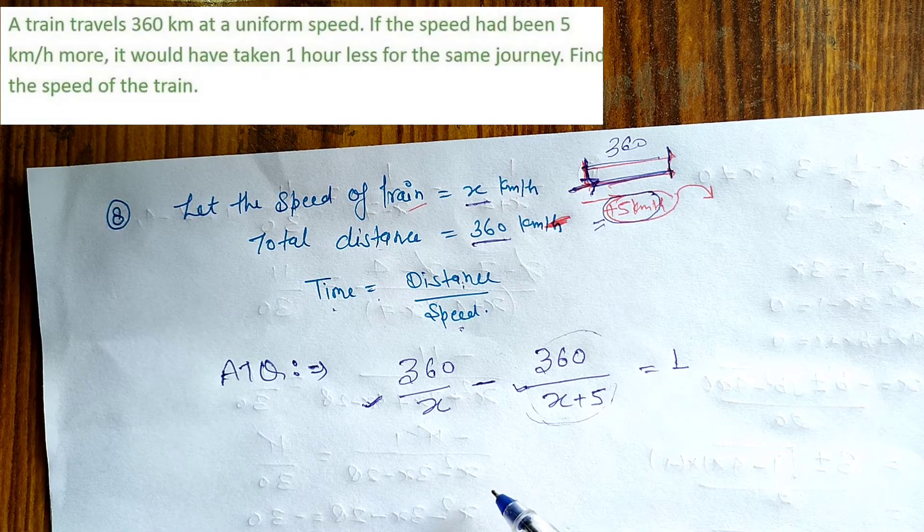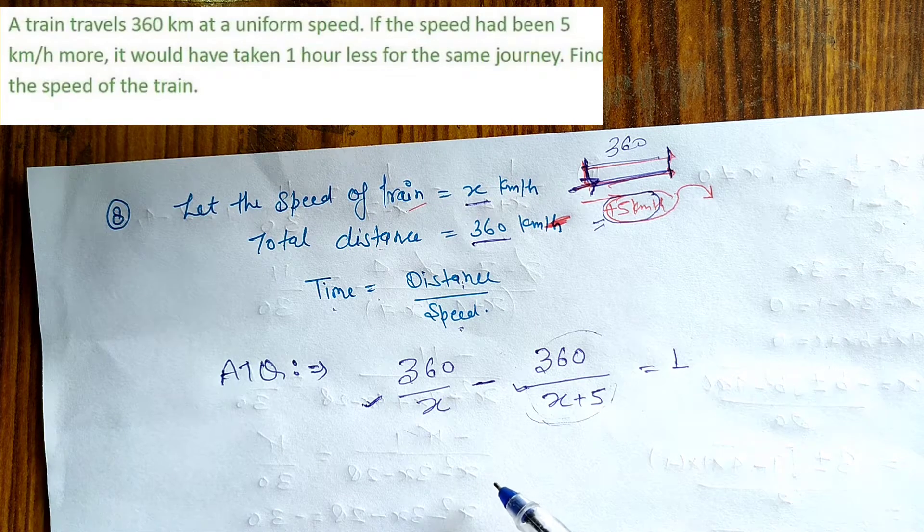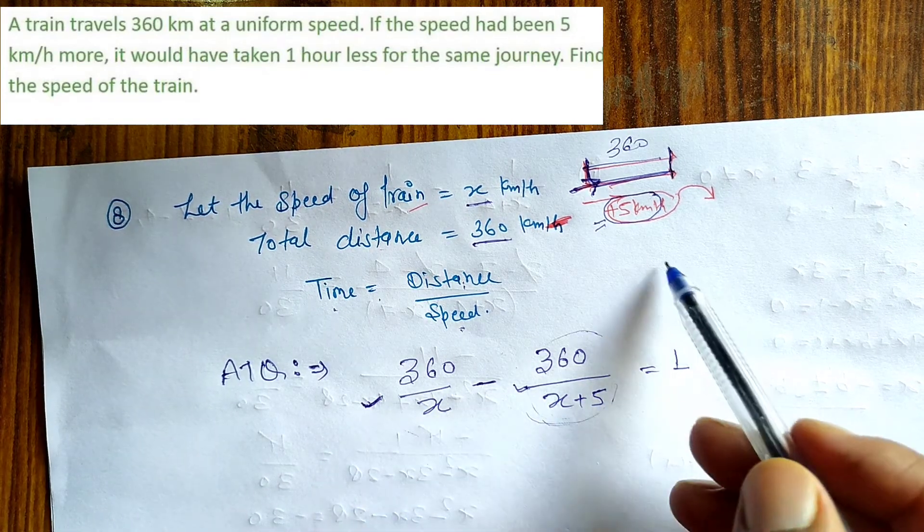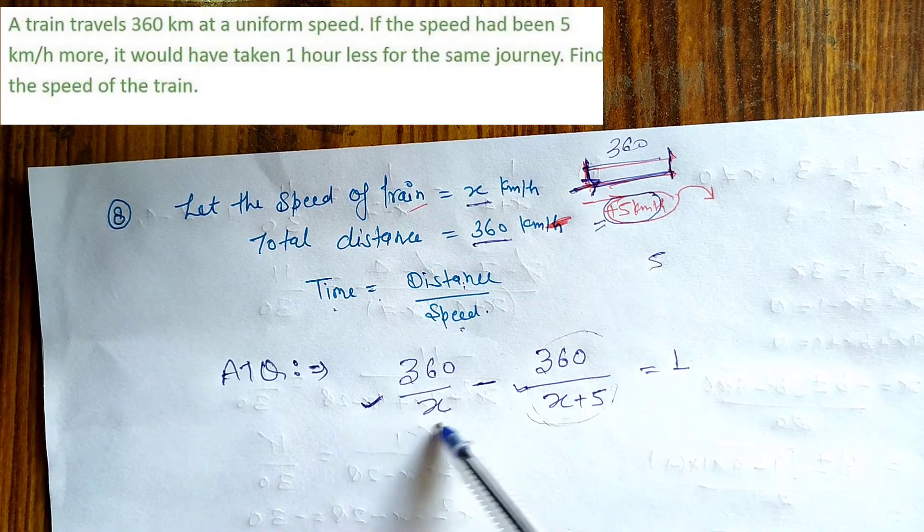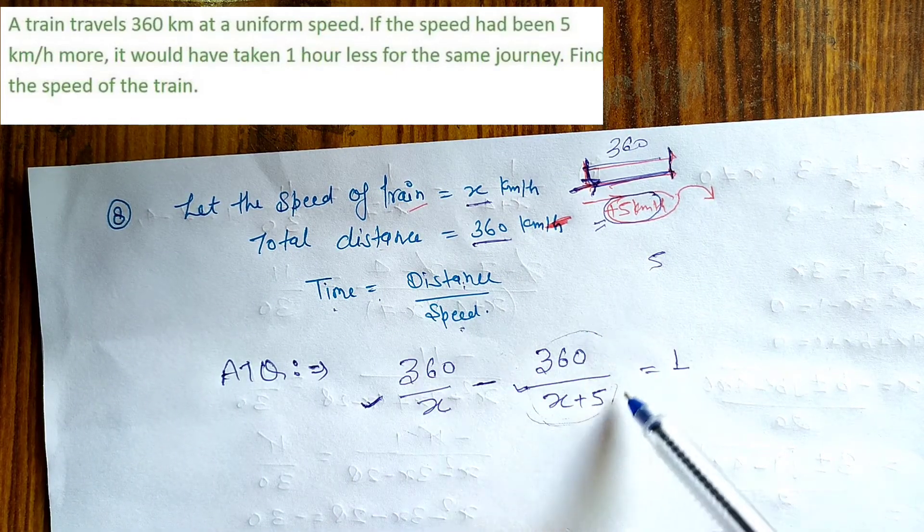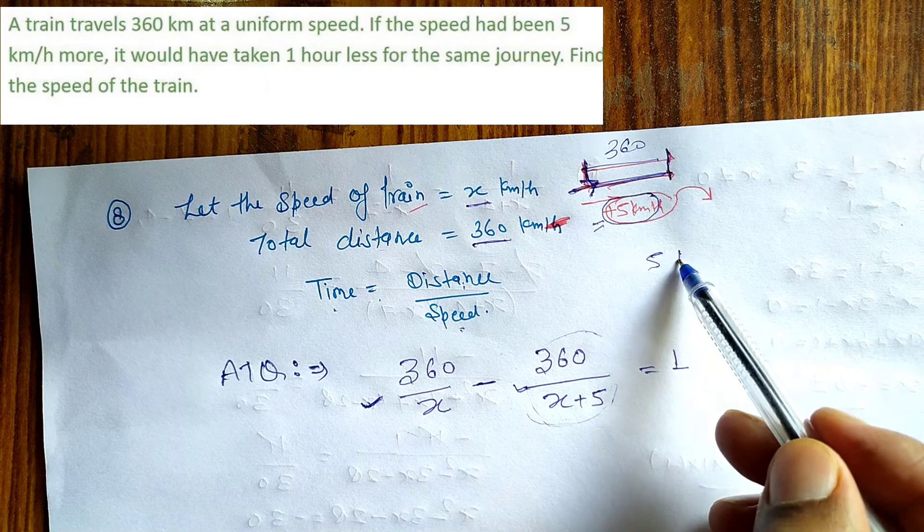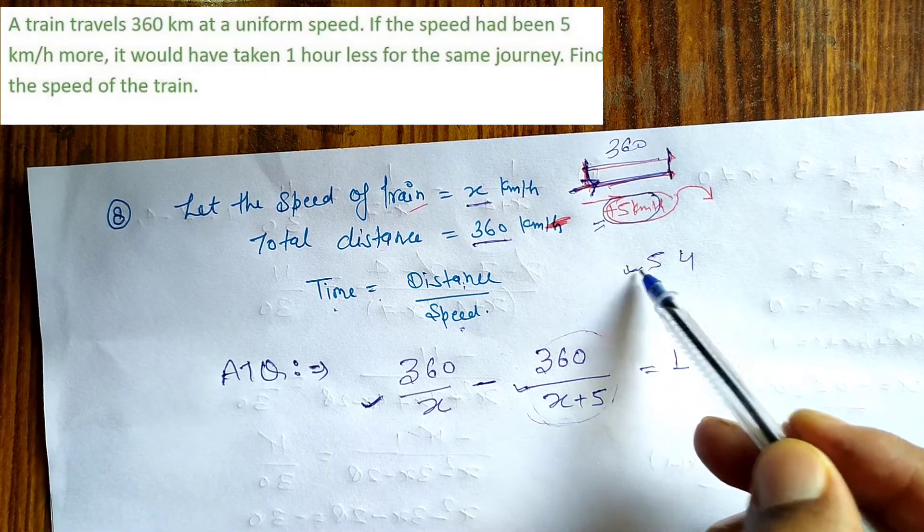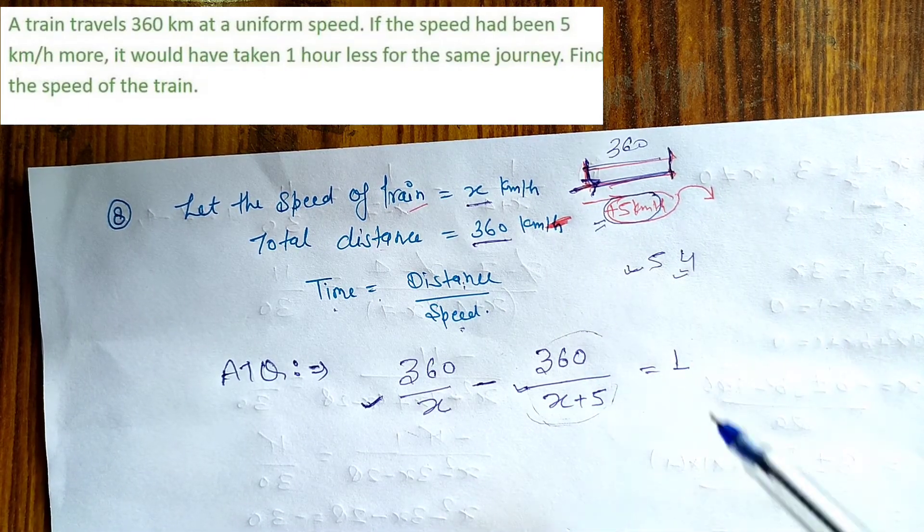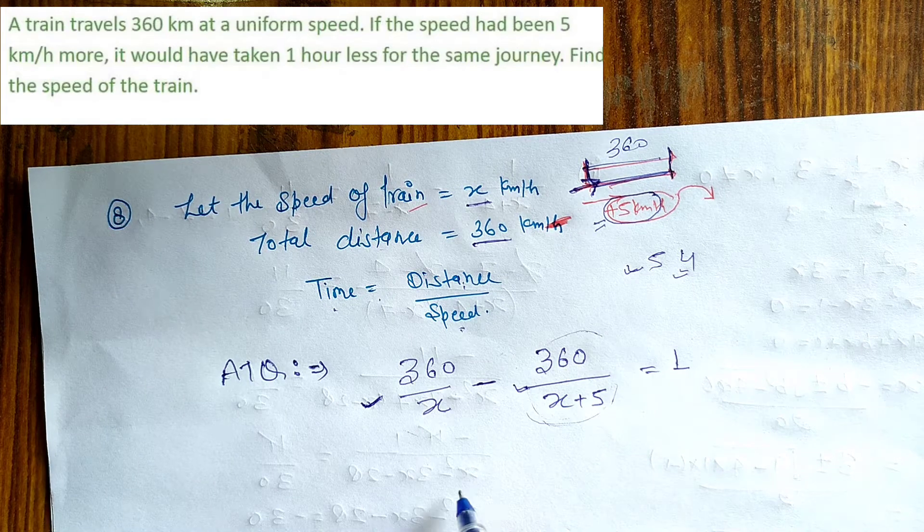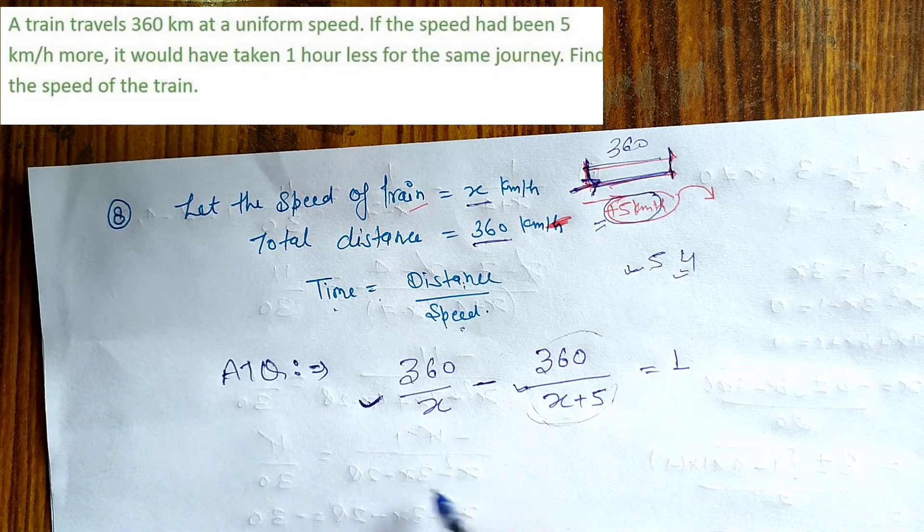One. Usne bola ki isko 1 hour less laga pehle ki comparison mein. Pehle time mein mano usne 5 hours lagaye, aur ab usne speed badha, to usne 1 hour kam laga. So pehle time mein se second wala time minus karunga, so we get 1 hour.